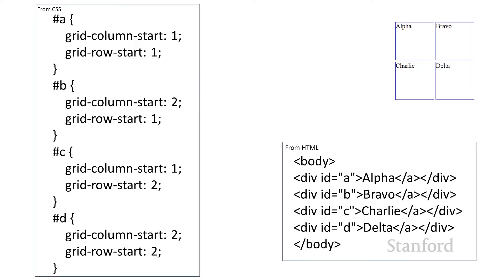Then I just place the elements on the grid. There are a number of different style properties to do this, but I'm going to keep things simple and use grid-column-start and grid-row-start. This allows us to place elements on the grid using just a few properties: grid-column-start, grid-column-end, grid-row-start, and grid-row-end. We'll talk about the end elements a little later. For now, if you just provide a start, it will put the element in that particular grid cell — you don't need the end unless you're doing something fancy.